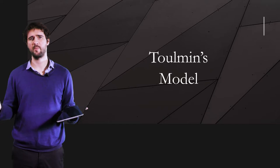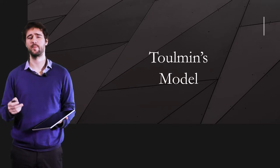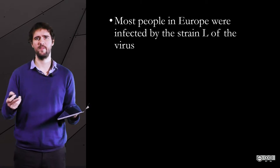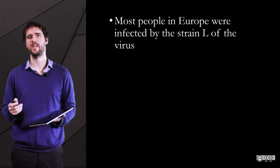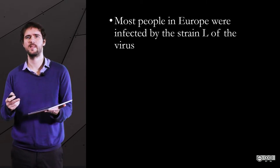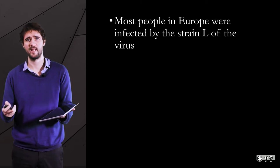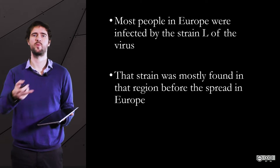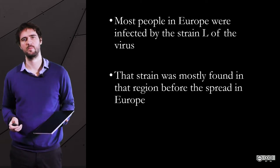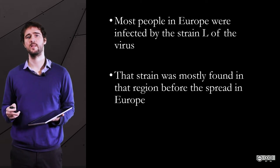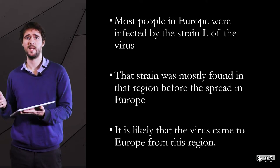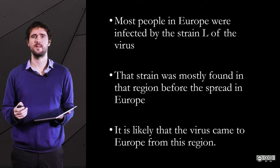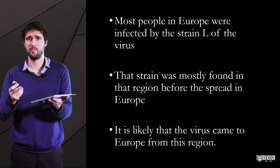For instance, let's formulate a hypothesis. We observe that most people in Europe were infected by the strain L of the virus — premise 1. The data show that it is that random region where the strain is most common before it spread in Europe — premise 2. Therefore, it is likely that the virus came to Europe from this region. You can see that data are present in both premises.